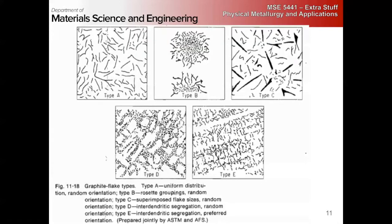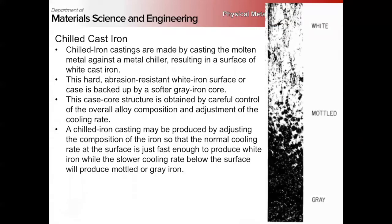In the literature, these become classified by types where the graphite can be clustered in different ways as a result of processing — uniformly with roughly uniform spatial and size distribution, clustered in rosettes, a bimodal size with uniform distribution, segregation to the interdendritic regions, or a preferential alignment — all depending on the composition and the casting conditions and how it was solidified.